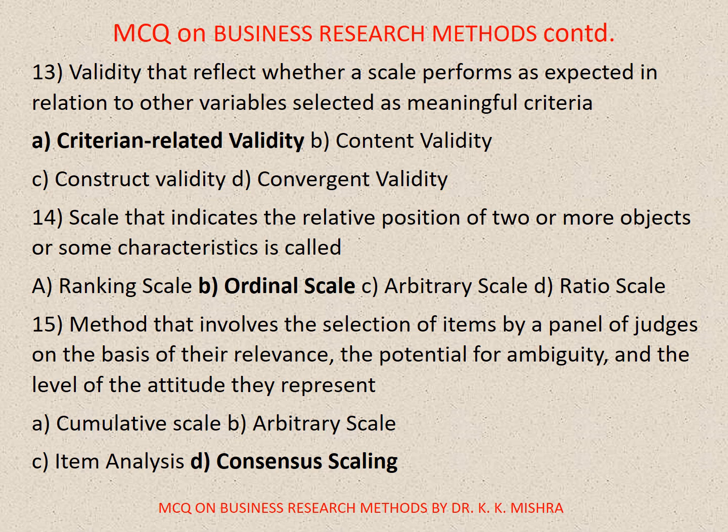Question number fifteen. Method that involves the selection of items by a panel of judges on the basis of relevance, the potential for ambiguity, and the level of the attitude they represent. Options are: A. Cumulative scale, B. Arbitrary scale, C. Item analysis, D. Consensus scaling. Correct option is D. Consensus scaling.